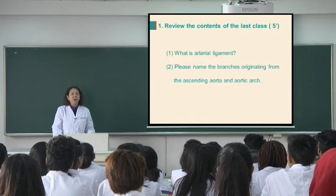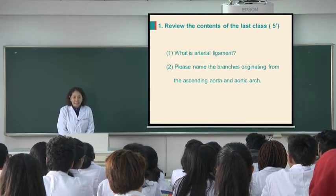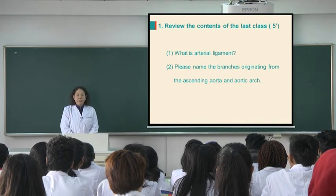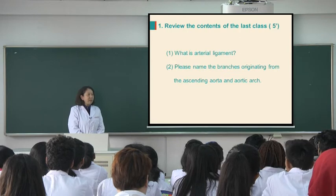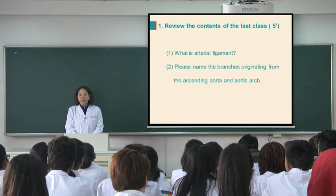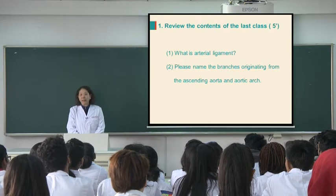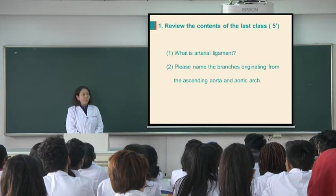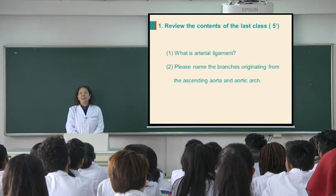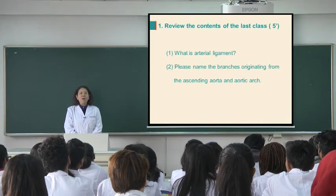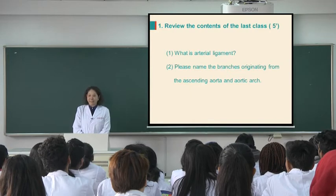First part: review the contents of the last class. I have two questions. The first one is, what is arterial ligament? The second one, please name the branches originating from the ascending aorta and the aortic arch. Who would like to answer my first question? The arterial ligament is the remnant of the ductus arteriosus, and it is located between the aortic arch and the pulmonary artery.